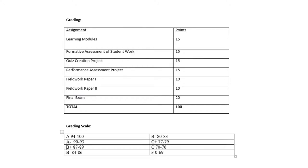This is a hundred-point class. You can see the assignments and what they're worth. Learning modules are worth one point a week for 15 points, plus various other assignments including your fieldwork. There are two parts to the fieldwork, each worth 10 points, and a final exam given online for 20 points, totaling 100 points. The grading scale: 94 to 100 is an A, 90 to 93 is an A minus, and so on.